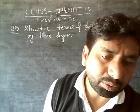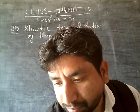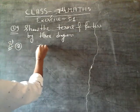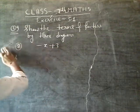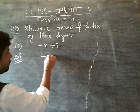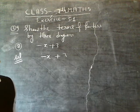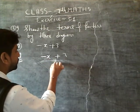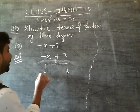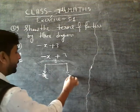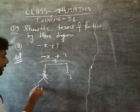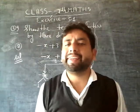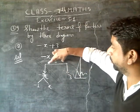So the terms and factors by tree diagram, minus x plus 3. Now minus x we can write minus 1 into x, and 3 symmetry is 3. This is what we have to say. Clear? These are the factors.